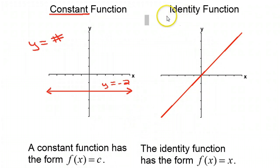The second special type would be called the identity function, and that would be the line y equals x. So that means it's going to go through the point (1, 1), (2, 2), (3, 3), (4, 4), etc.